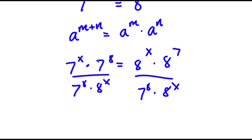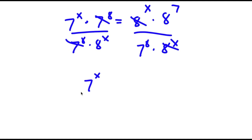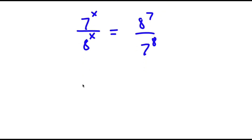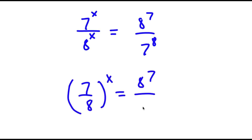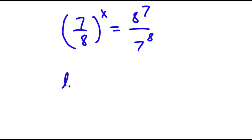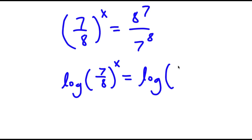I divide both sides by 7 to the power of 8 times 8 to the power of x. These cancel out, leaving 7 to the power of x over 8 to the power of x equals 8 to the power of 7 over 7 to the power of 8. This is the same as (7 over 8) to the power of x equals 8 to the power of 7 over 7 to the power of 8. Now I take the log on both sides.